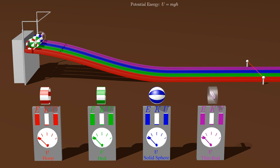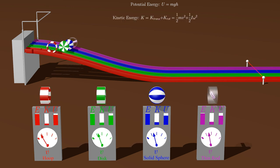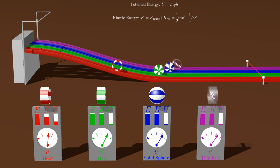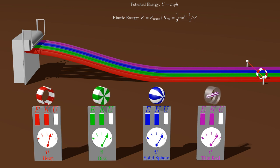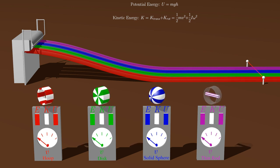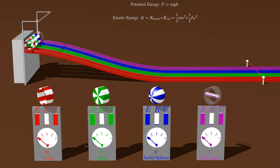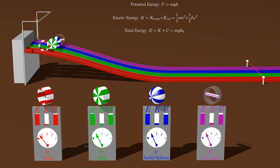The potential energy of the rolling object is essentially the energy stored in the object's height. The kinetic energy is the energy associated with motion and has two parts: the translational kinetic energy which is associated with the overall motion of the object, and the rotational kinetic energy which is associated with the rotation of the object about its center of mass. The total energy is then the sum of the kinetic and potential.